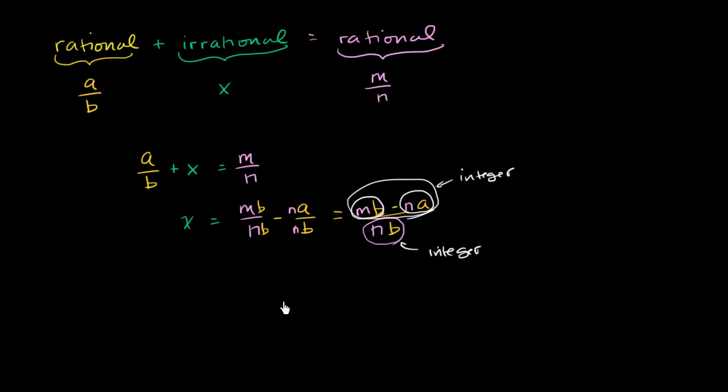So it looks like, assuming that the sum is rational, that all of a sudden we have this contradiction. We assumed that x is irrational, but all of a sudden, because we made that assumption, we're able to represent it as the ratio of two integers. So this tells us that x must be rational. And that is the contradiction.